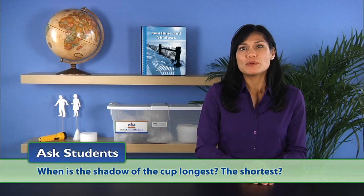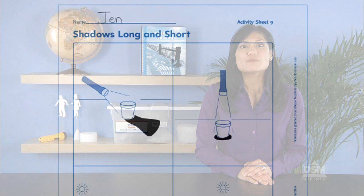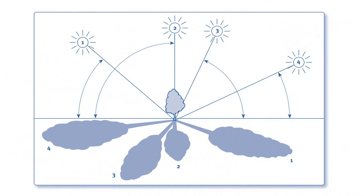Next, ask students: when is the shadow of the cup longest? The shortest? Students should respond that when the flashlight is lower or closer to the desk, the shadow is longer, and when the flashlight is higher above the cup, the shadow is shorter. Similarly, when the sun appears lower in the sky or closer to the ground, the shadow of the tree becomes longer. Conversely, when the sun appears higher in the sky, almost directly above the tree, the shadow becomes shorter.